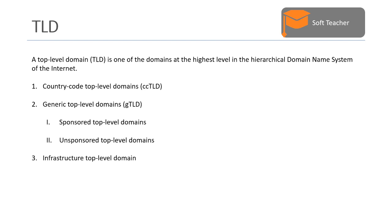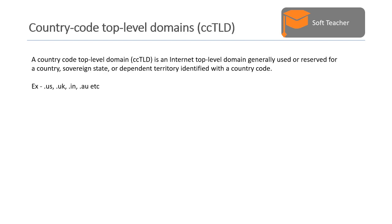The first one is country code top level domain. The second one is generic top level domain, which is subcategorized into two parts: sponsored top level domain and unsponsored top level domain. The third one is infrastructure top level domain.